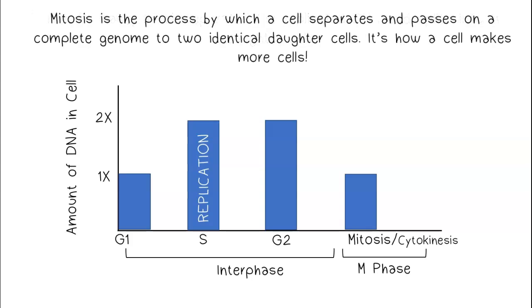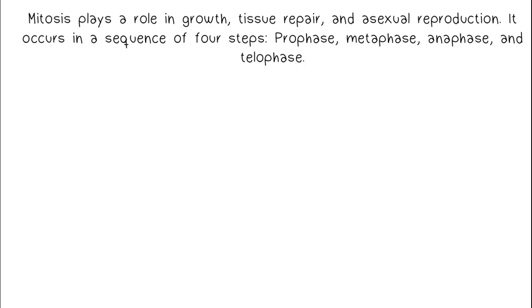Mitosis is the process by which a cell separates and passes on a complete genome to two identical daughter cells. It's how a cell makes more cells. Mitosis plays a role in growth, tissue repair, and asexual reproduction.